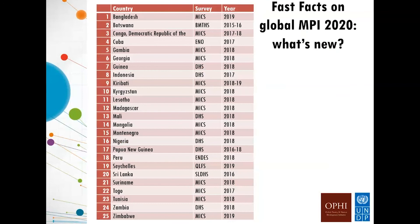The updated countries this year include some with new surveys such as Botswana, Democratic Republic of Congo, or Indonesia, but also new countries such as Cuba or Papua New Guinea. We are very grateful to colleagues who supported our attempts to analyze their data. This work is a joint effort of the Human Development Report Office, with a team including Cecilia Calderón on the HDRO side, and a team led by Usha Kanagaratnam and Nicolai Suppa on the OPHI side.